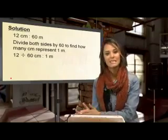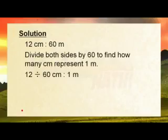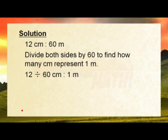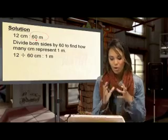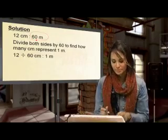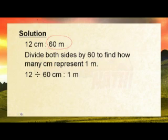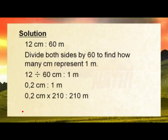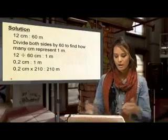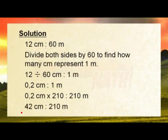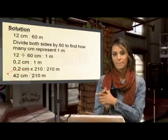12 centimeters on the map gives us 60 meters on the ground. We divide both sides by 60 to find out how many centimeters represents one meter — we want to get meters on its own. 12 divided by 60 gives us 0.2 centimeters per meter. Then 0.2 times 210 — which was the total meters of the caravan park — gives us 42 centimeters. So 210 meters on the ground equals 42 centimeters on the map.